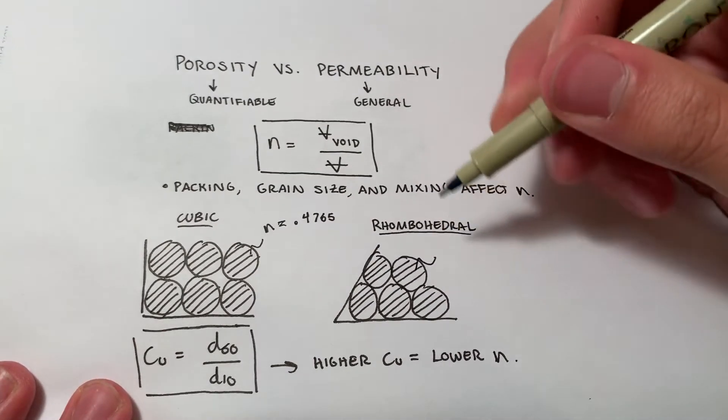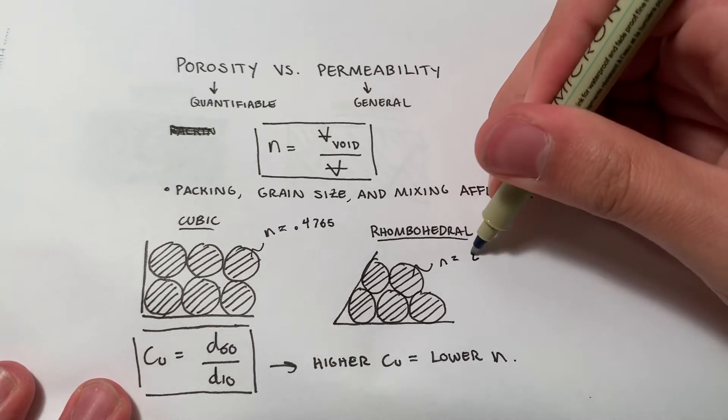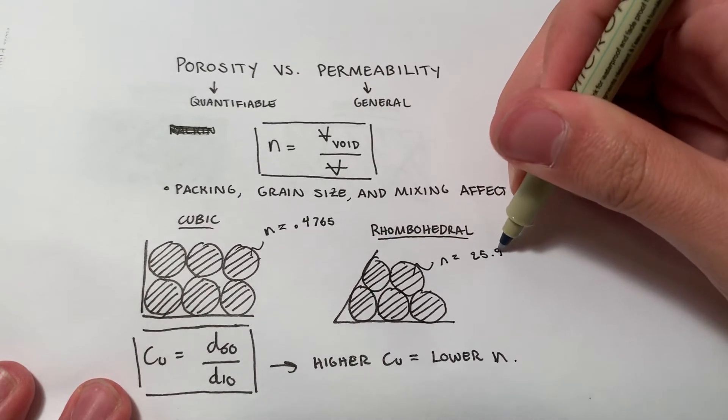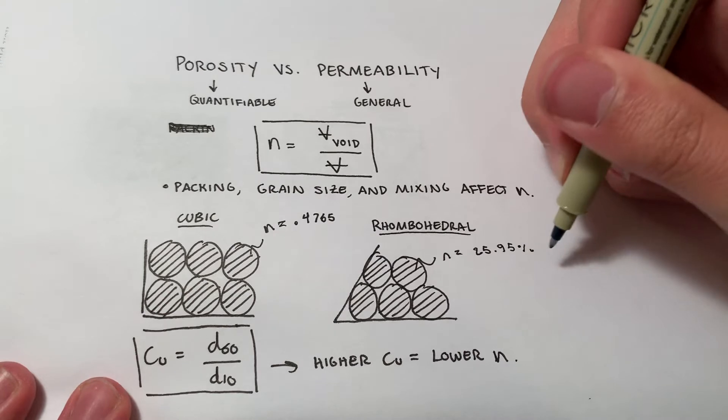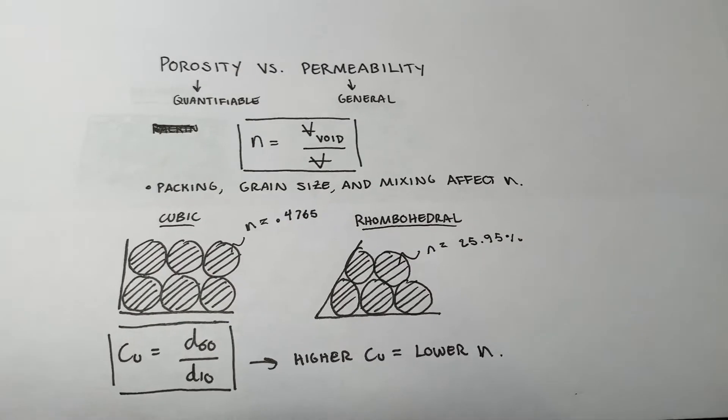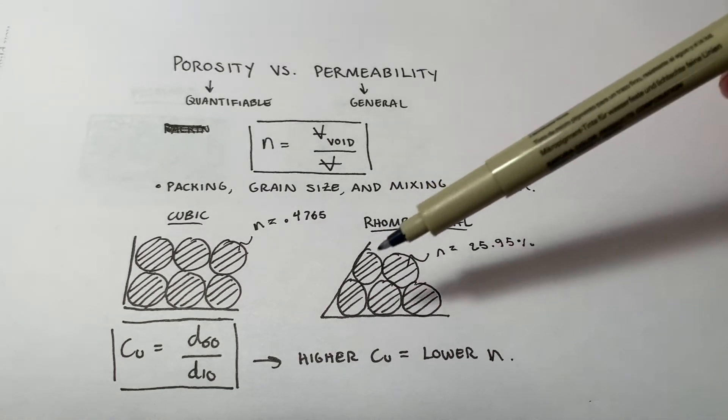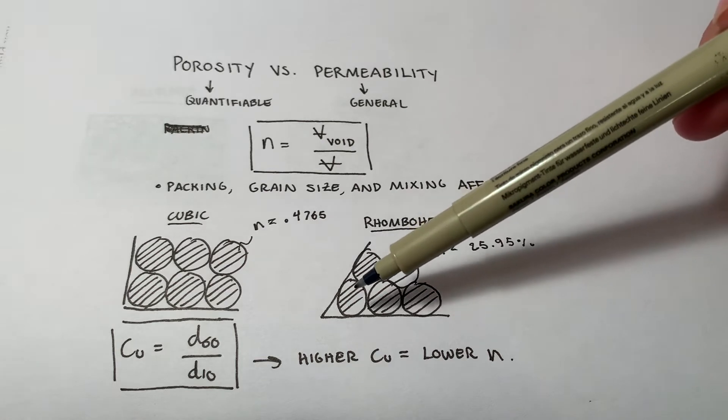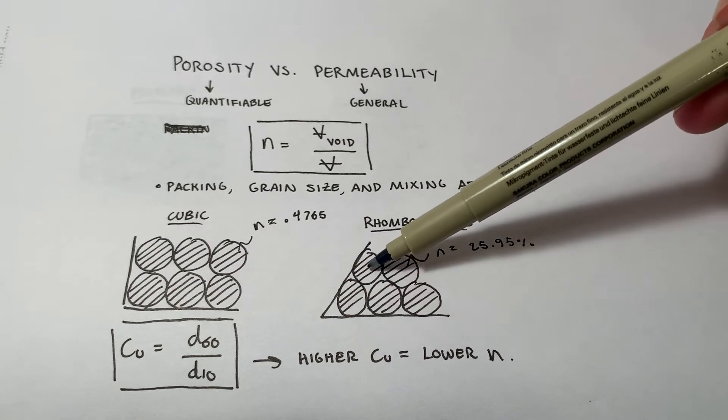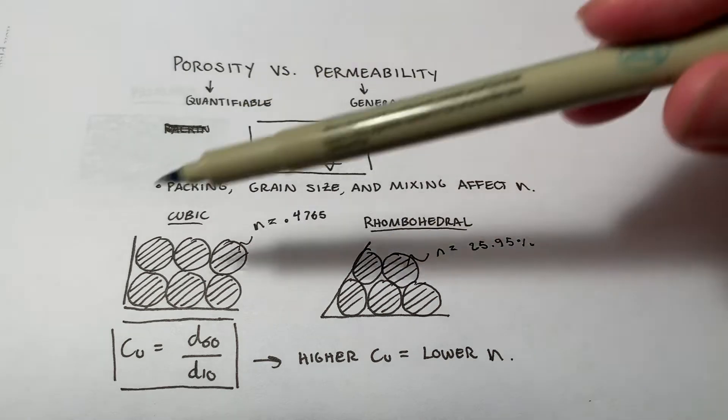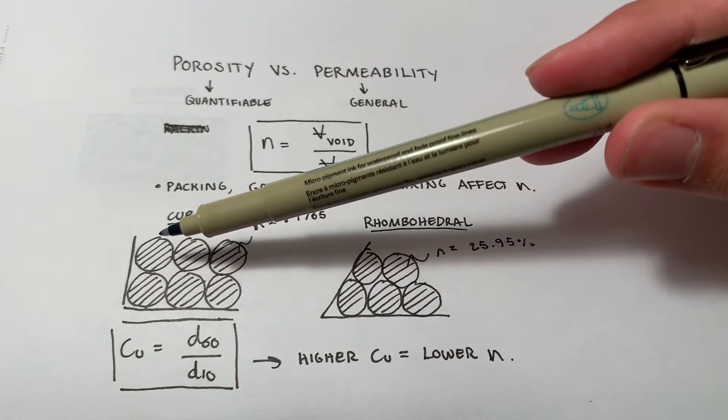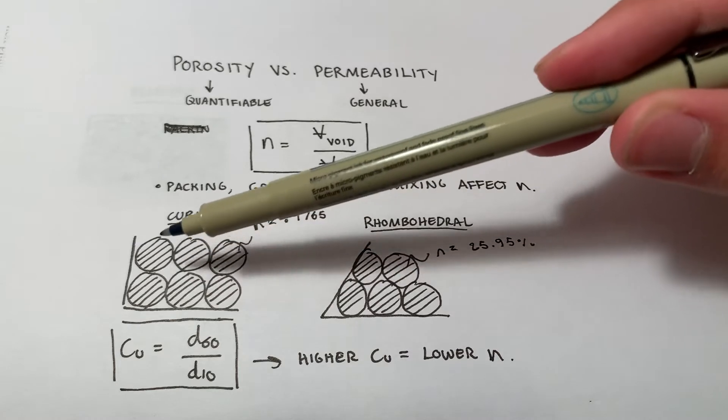Rhombohedral, by contrast, is going to be at about 25.95%. So, rhombohedral, significantly more efficient packing, which leads to less porosity, because those solids are going to be consuming more of that void space. You'll also notice rhombohedral, you can think of it geometrically. There's 1, 2, 3 tangent connections on this circle, which is analogous to this circle, as compared to only 2 on this guy.